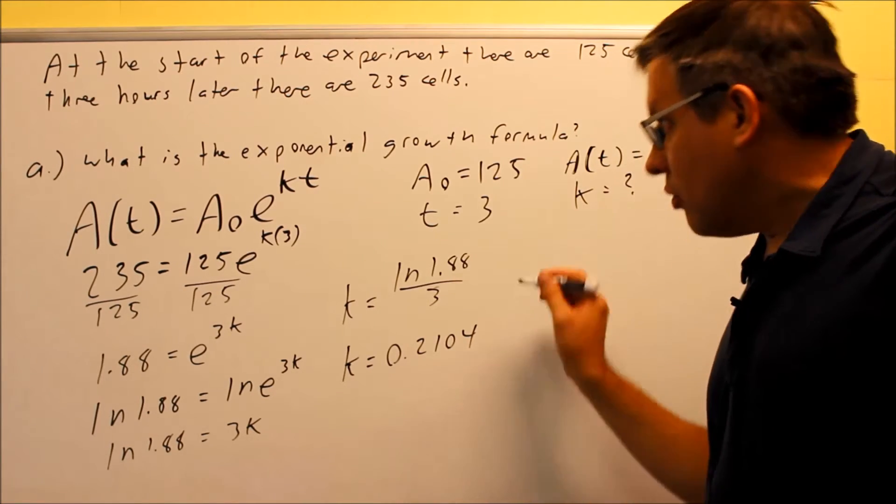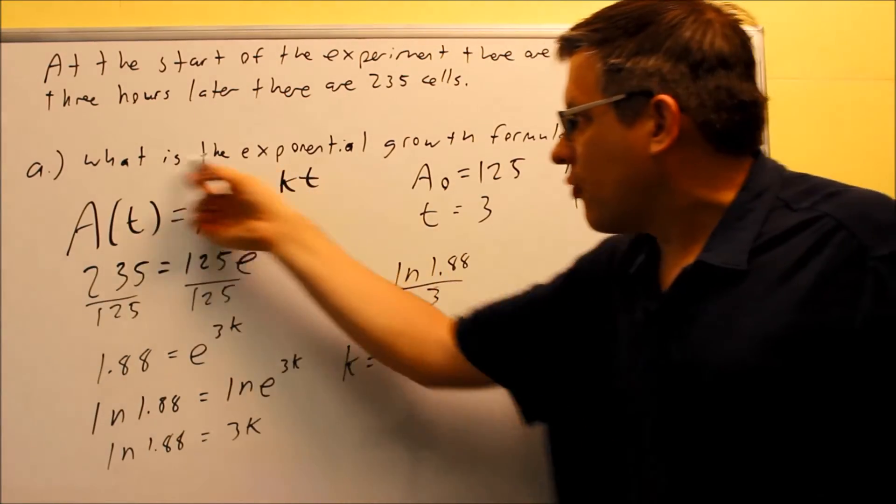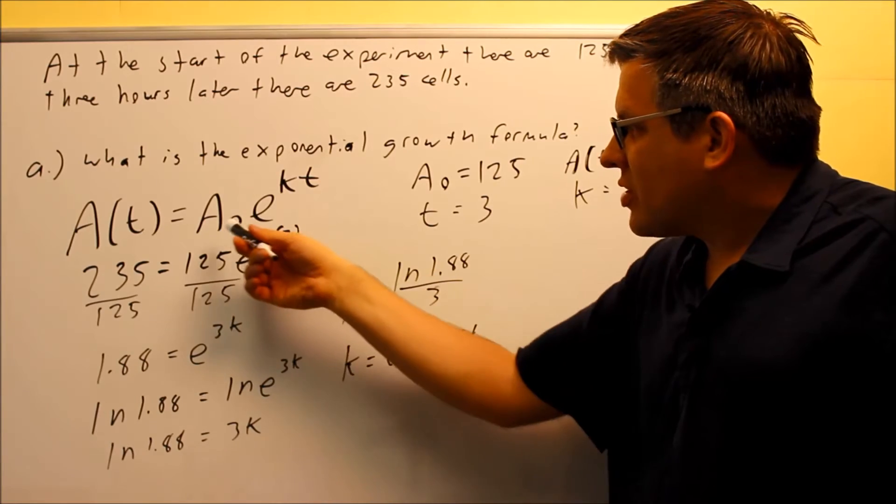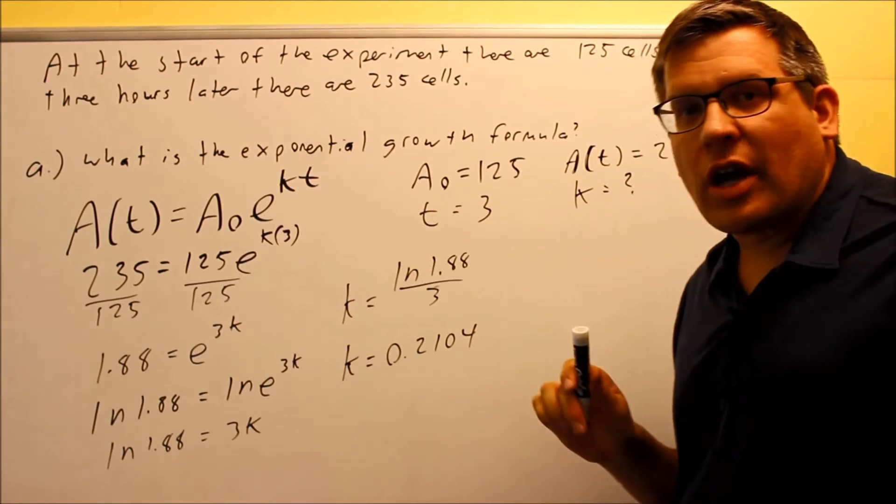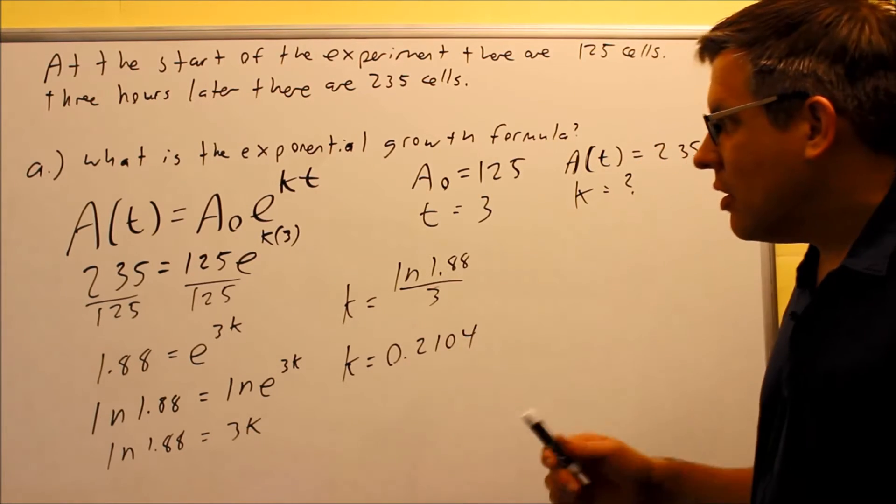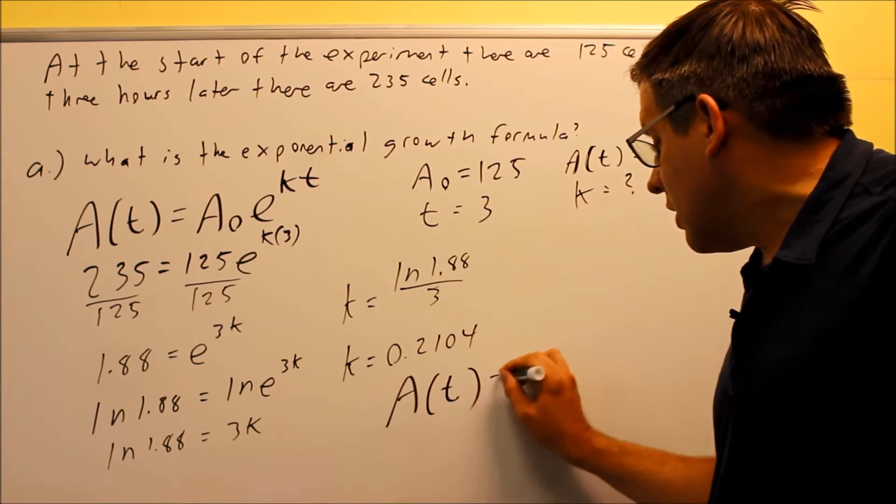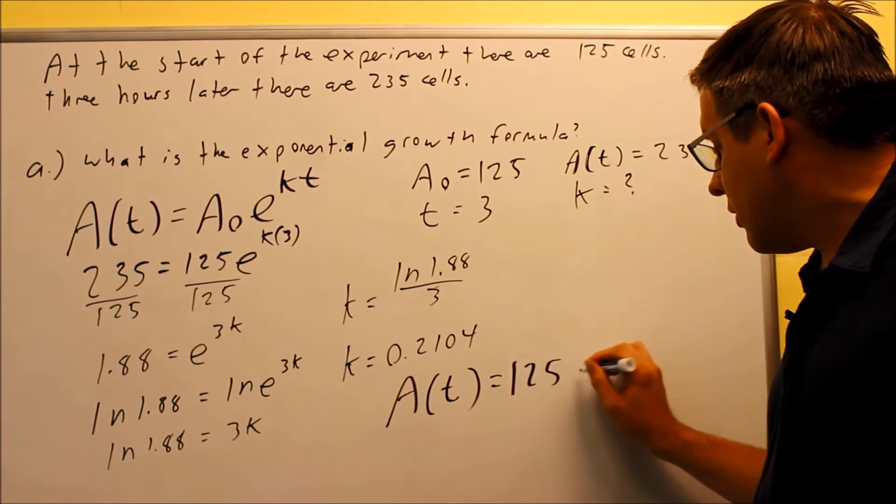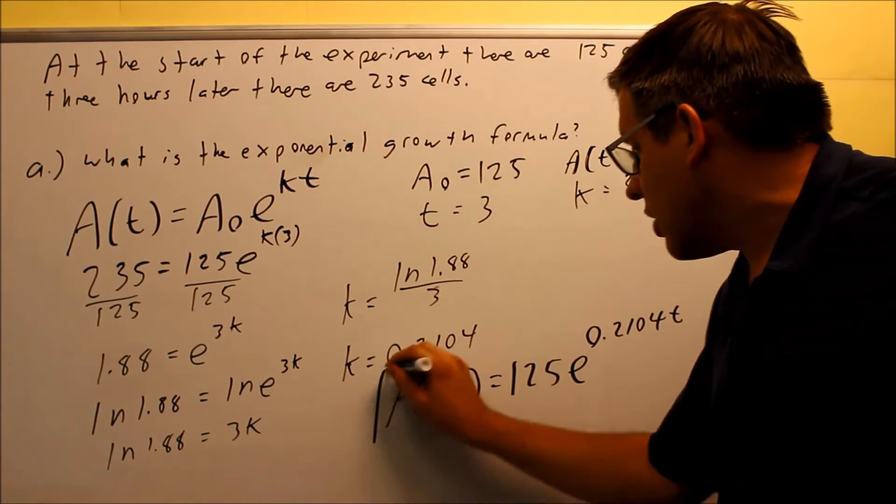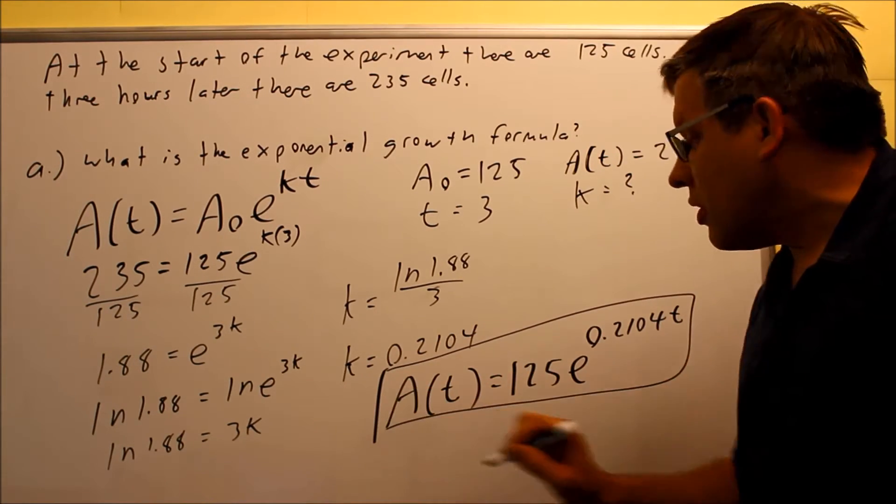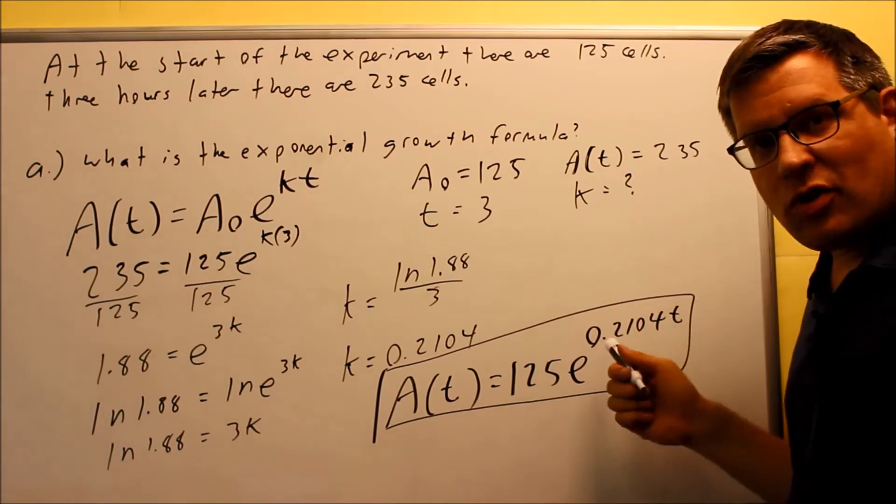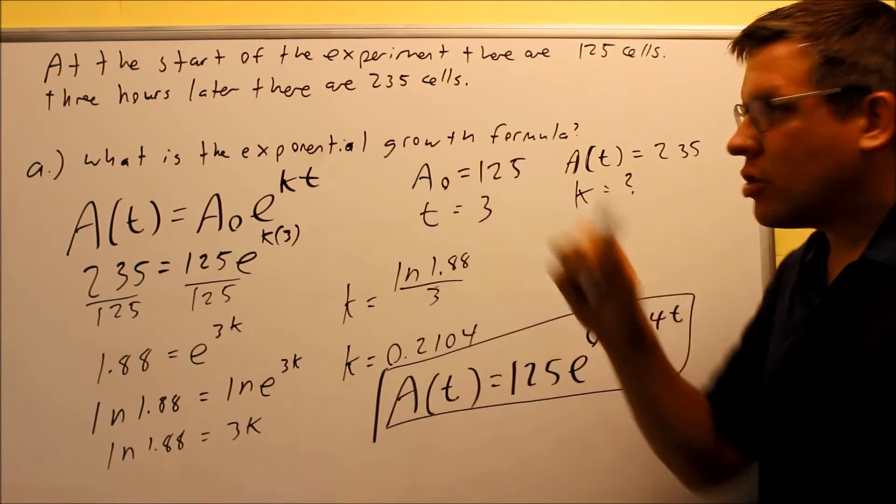So I need to put everything all together. So my answer, what I'm going to do when I write this, I'm going to go back to this formula here and I'm going to leave the t's in there. But I'm going to replace the A₀ and the k. So that way I get a general formula that I can use to find the population at any value of t. So here's what it'll look like. I have A(t). It's going to equal A₀, which is 125, times e to the 0.2104t. So this right here, that would be the answer for part a. That's what they want. They want the exponential growth formula. This one is specific to the information that was originally provided.